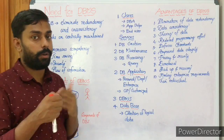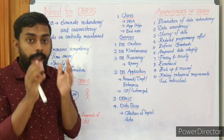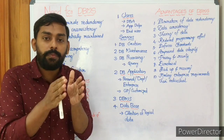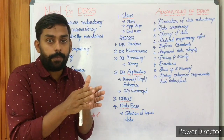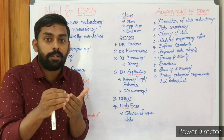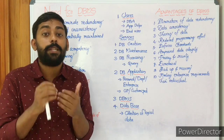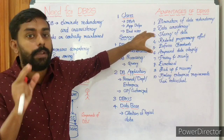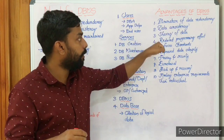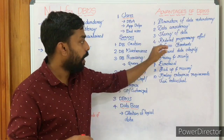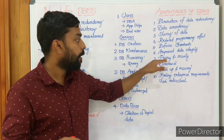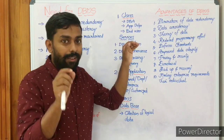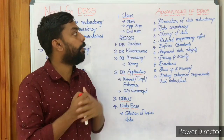Now we move to the advantages of DBMS. There are two systems of managing files: file system and database management system. The disadvantages of file systems can be largely controlled using DBMS. There are 10 specific advantages: elimination of data redundancy, data consistency, sharing of data, reduced programming effort, enforces standards, improved data integrity, privacy and security, economical, backup and recovery, and meeting enterprise requirements.